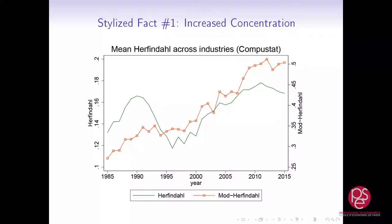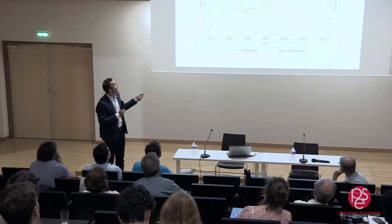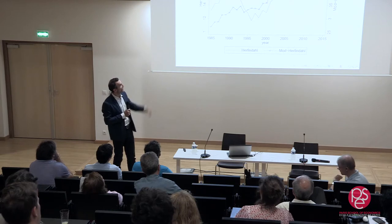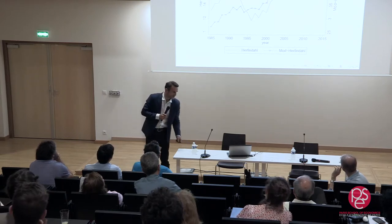The facts themselves are neither very new nor very controversial. The first fact is that if you look across industries — typically three-digit SIC codes — and look at measures of concentration, then take the average concentration across all these industries, you find, broadly speaking, an increase in concentration across most industries. Here you have two measures of the Herfindahl index: the usual green one, and the modified one that accounts for firms with different names but the same owners and shareholders — perhaps not competing that much. In both cases, you find a broad increase in the Herfindahl.